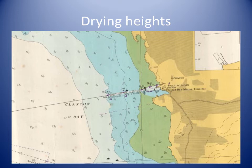This slide shows the drying height area of Claxton Bay. In addition to soundings, nautical charts give us depth information in colors. The area in the darker blue shows where the water is less than 5 meters deep. The area in light blue shows where the water is between 5 and 10 meters. The white area is where the water depth exceeds 10 meters. Land is shown in a brownie-yellowie color.